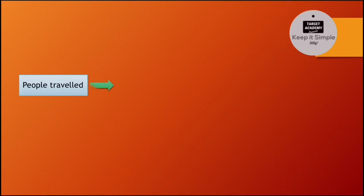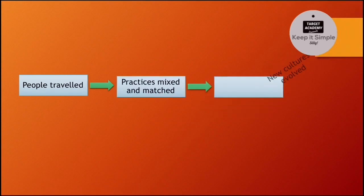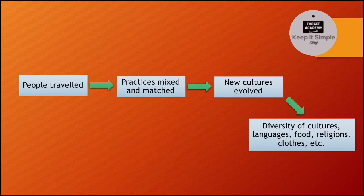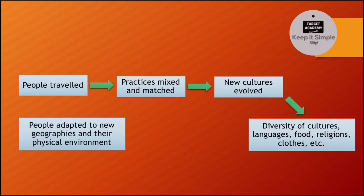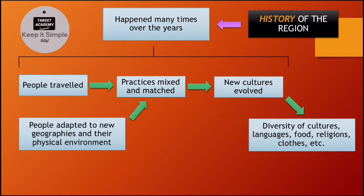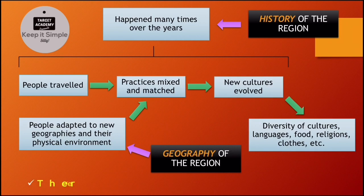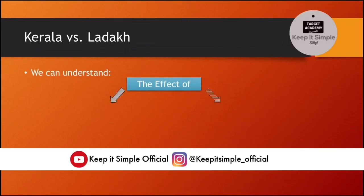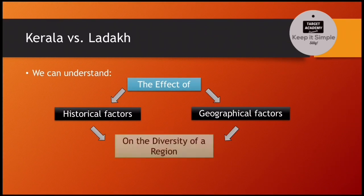To sum up, history and geography of a culture affect its people. We can see that people traveled and because of that, their practices mixed and matched. When people traveled to new places repeatedly in the past, there were changes in culture and differences in the history of the region. Therefore, historical and geographical factors influence the diversity of a region. To understand this effect, we compare Kerala and Ladakh — this idea will be more clear.